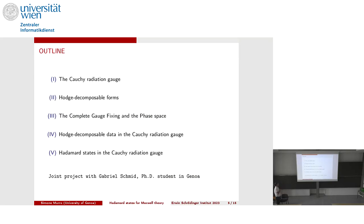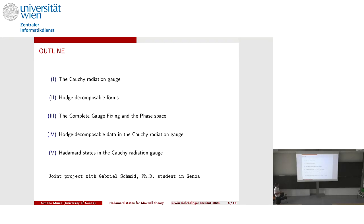My talk is divided into five parts. In the first part I will explain which gauge I am going to study in order to fix all gauge degrees of freedom. Once we understand this gauge, I will define a suitable space of forms that I call Hodge decomposable, where this gauge can actually be achieved. Once restricted to this space it will not be too difficult to show this is a complete gauge fixing; then we study the phase space and understand the space of Hodge-decomposable data in the Cauchy radiation gauge. This is joint work with my PhD student Gabriel Schmidt.